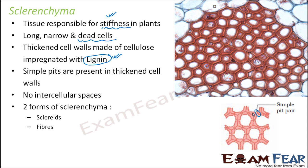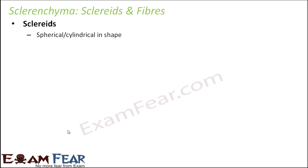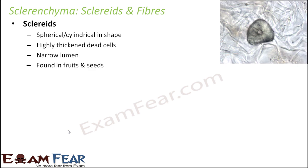For sclerenchyma, there exist two forms: one is sclereids and the second is fibers. The sclerenchyma cells have two different shapes, and based on the shape of the cells we say there are two forms of sclerenchyma. Now what are sclereids? These are spherical or cylindrical in shape. Here you can see the real picture of a sclereid — this is how it looks like under a microscope, somewhat spherical or sometimes cylindrical in shape. They have highly thickened dead walls.